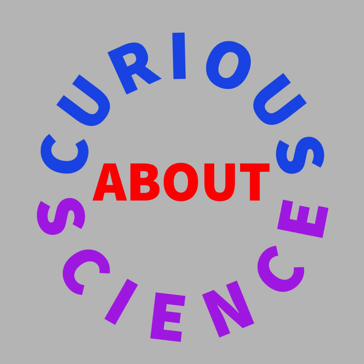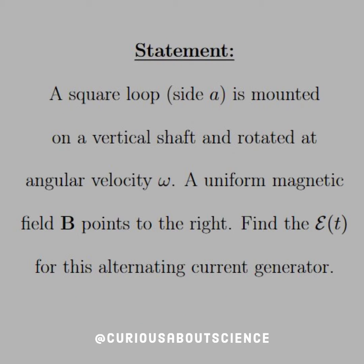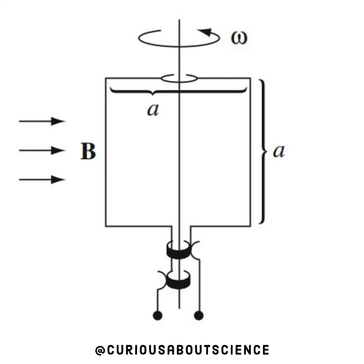This one looks like fun, but we are going to have to do a little bit of doodling on it. The statement reads: a square loop of side A is mounted on a vertical shaft and rotated at angular velocity omega. A uniform magnetic field B points to the right. Find the EMF as a function of T for the alternating current generator. Alright, let's draw it out.